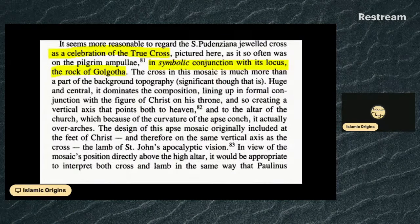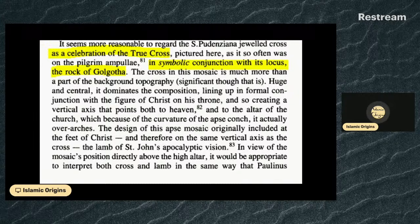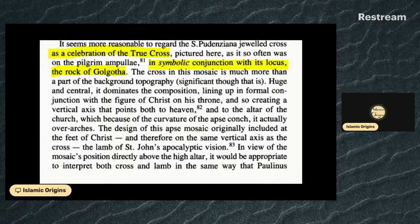So this is where we left off last time. We're looking at the case against it being an actual monumental cross in Jerusalem. We'd looked at some of the arguments for and against, and we're wrapping up the arguments against it being a monumental cross.